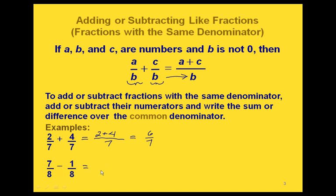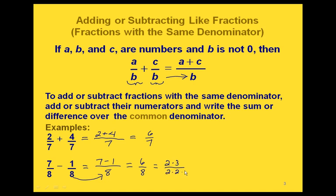It works the same way with subtraction. We write our new denominator, which is the same as the denominator these two had in common, and on the top of our fraction bar we take our two numerators and do whatever operation was in between — in this case subtraction. Here we end up with 6 eighths. Now this fraction is not in simplest form, so we would want to reduce it. We write our prime factorizations: 6 is 2 times 3, and 8 is 2 times 2 times 2. We can cancel out a 2 from each, and we end up with 3 over 2 times 2, or 3 fourths. This is our final answer in simplified form.